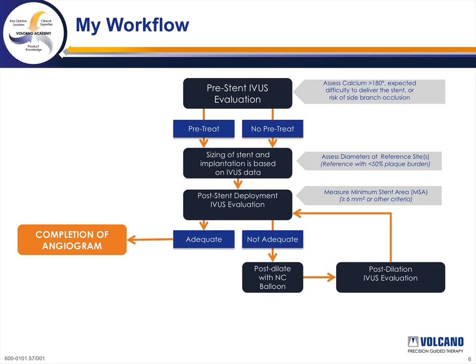Once we've deployed our stents, we do a repeat IVUS run to assess the distal stent edge, the minimum stent area, and the proximal stent edge, and we often use ChromaFlow. If we have adequate stent expansion, no edge effects, and a minimum stent area greater than 6 mm², our assessment is adequate and we perform a completion angiogram. If stent expansion is not adequate, we post-dilate with a non-compliant balloon and perform a repeat evaluation. We have posted on our IVUS machines nominal stent areas for 2.5, 2.75, 3.0, and 3.5 mm stents.